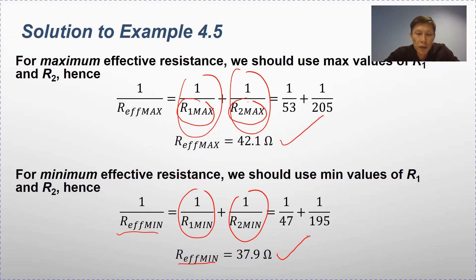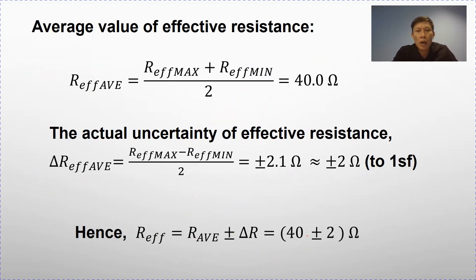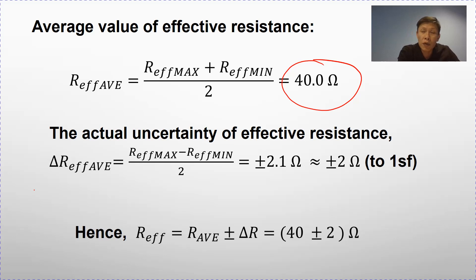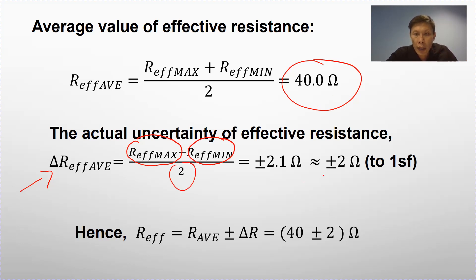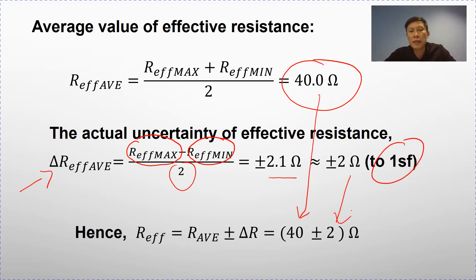We get a maximum value and a minimum value. We find the average by adding the two values and dividing by 2, getting an average value of exactly 40. To estimate the final uncertainty, we find the range by taking maximum minus minimum and dividing by 2. Rounding to 1 significant figure, we get 2. So the final answer is 40 plus or minus 2 ohms.